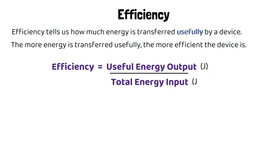It's really important that if one of your energy values is given in kilojoules, you convert it so that they both have the same unit. If you want to work out efficiency as a percentage, you need to multiply your final answer by 100. You can either give your answer as a decimal or as a percentage.